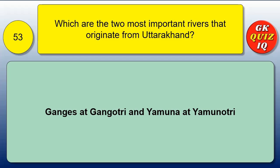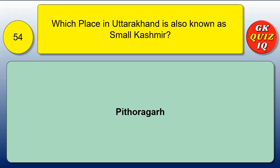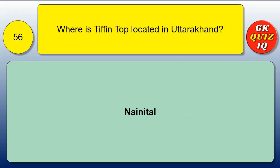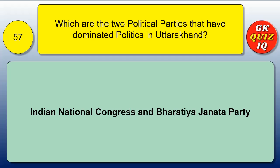Which are the two most important rivers that originate from Uttarakhand? Ganges at Gangotri and Yamuna at Yamunotri. Which place in Uttarakhand is also known as Small Kashmir? Pithoragarh. Which is the lowest land point in Uttarakhand? Sharda Sagar Reservoir. Where is Tiffin Top located in Uttarakhand? Nainital. Which are the two political parties that have dominated politics in Uttarakhand? Indian National Congress and Bharatiya Janata Party.